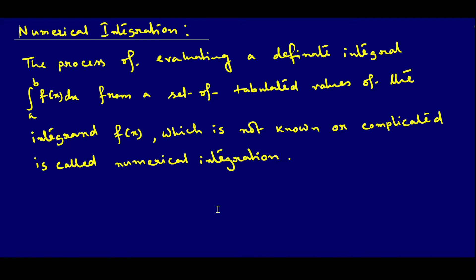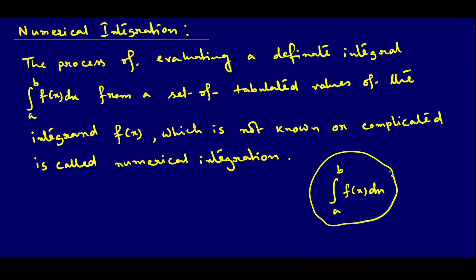What is numerical integration? Numerical integration is a process where a definite integral — that is, the integral from a to b of f(x) dx — is evaluated. This is called a definite integral because after integrating we get a fixed value, where a is the lower limit and b is the upper limit. But sometimes if the function f(x) is not completely known to us or it is a complicated function, we still need to integrate it.